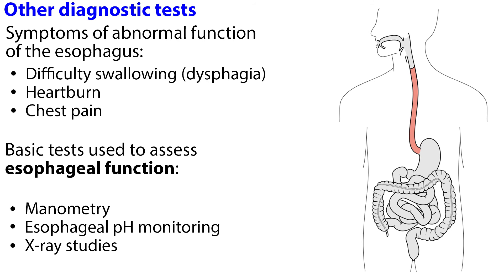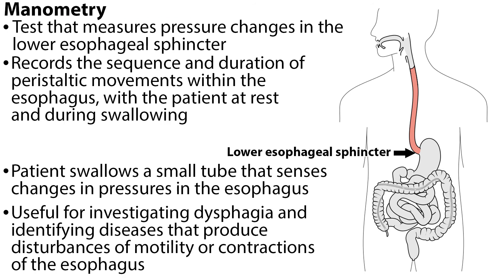There are several other diagnostic tests used to evaluate abnormal function of the esophagus. While endoscopy can look at the lining of the esophagus, it does not usually provide information about the cause of the problem. Three major symptoms to evaluate include difficulty swallowing, heartburn, and chest pain. There are three basic tests used to assess esophageal function: manometry, esophageal pH monitoring, and x-ray studies. Manometry is a test that measures the pressure changes in the lower esophageal sphincter and records the sequence and duration of peristaltic movements within the esophagus. The patient swallows a small tube that senses changes in pressure in the esophagus, and this test is useful for investigating dysphagia and identifying diseases that produce disturbances of motility.